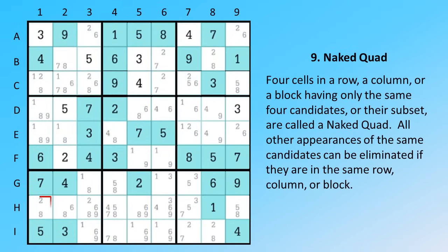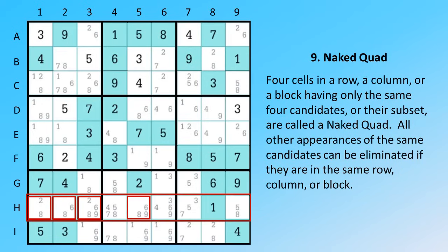Four cells in a row, a column, or a block having only the same four candidates, or their subset, are called a naked quad. All other appearances of the same candidates can be eliminated if they are in the same row, column, or block.